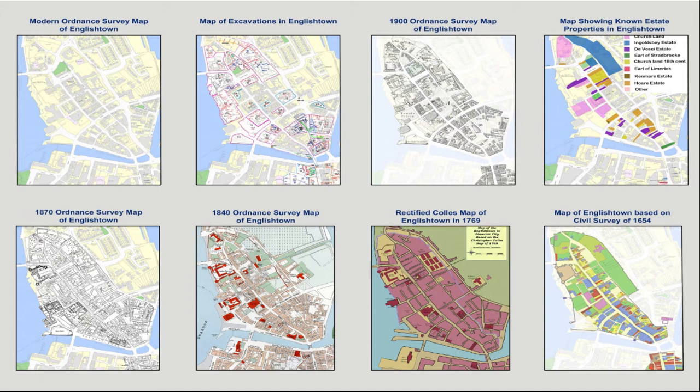I rectified the Collis map from 1766. Previous work I did with Limerick Civic Trust was to map the Civil Survey — the Cromwellian survey — which defined all the properties within the walls of Limerick in 1640, and who owns them in 1656 as well.